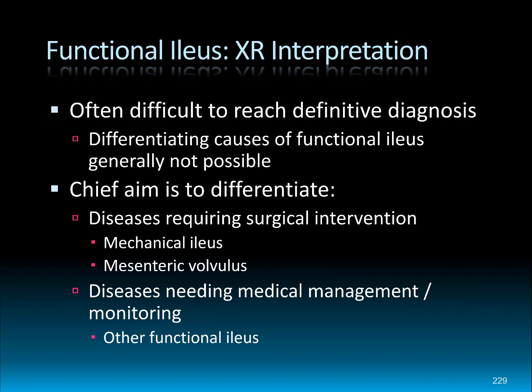When there's a functional ileus, it's usually tough to reach a definitive diagnosis because there are many causes and most don't have specific findings beyond being a functional ileus. Radiographically, our key goal is to differentiate diseases that need surgery from those that don't. In the functional ileus category, the cases that need surgery are mesenteric volvulus and mechanical ileus. So our chief aim is to recognize whether this is a typical functional ileus — if yes, we manage those medically. We can discuss endoscopy if inflammatory bowel disease is a concern, but once defined as typical functional ileus, surgery is off the table.